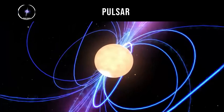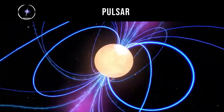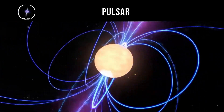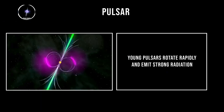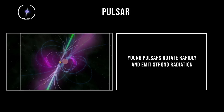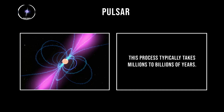Over time, pulsars gradually slow down as they lose rotational energy through electromagnetic radiation. Young pulsars rotate rapidly and emit strong radiation, while older pulsars spin more slowly and eventually become too weak to detect. This process typically takes millions of years.